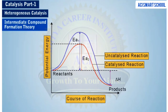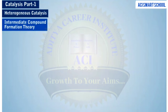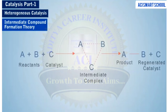Now, as the energy barrier for the catalytic path is lower than the non-catalytic path, the rate of reaction increases in the presence of a catalyst. Thus, we see that the intermediate compound theory provides an alternative sequence of elementary steps to accomplish the desired chemical reaction.